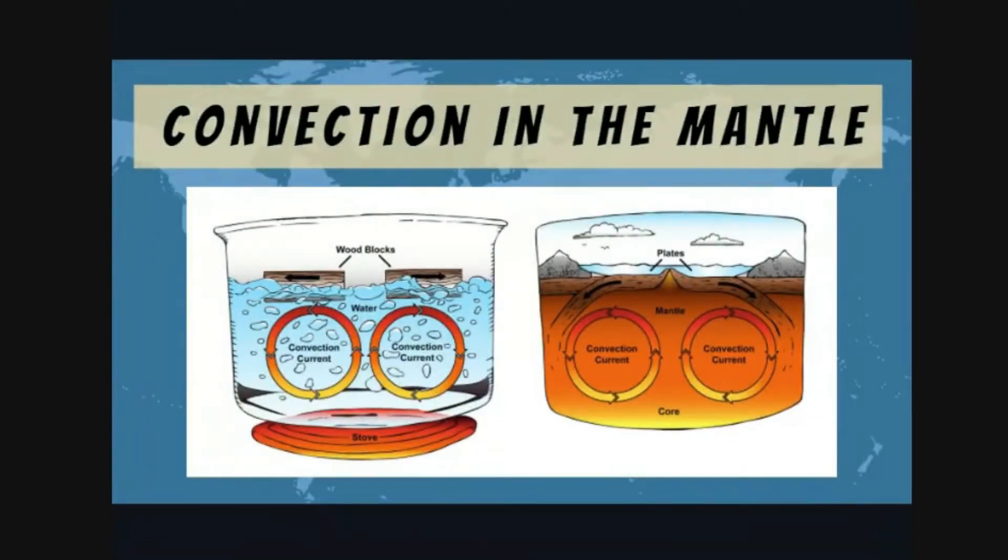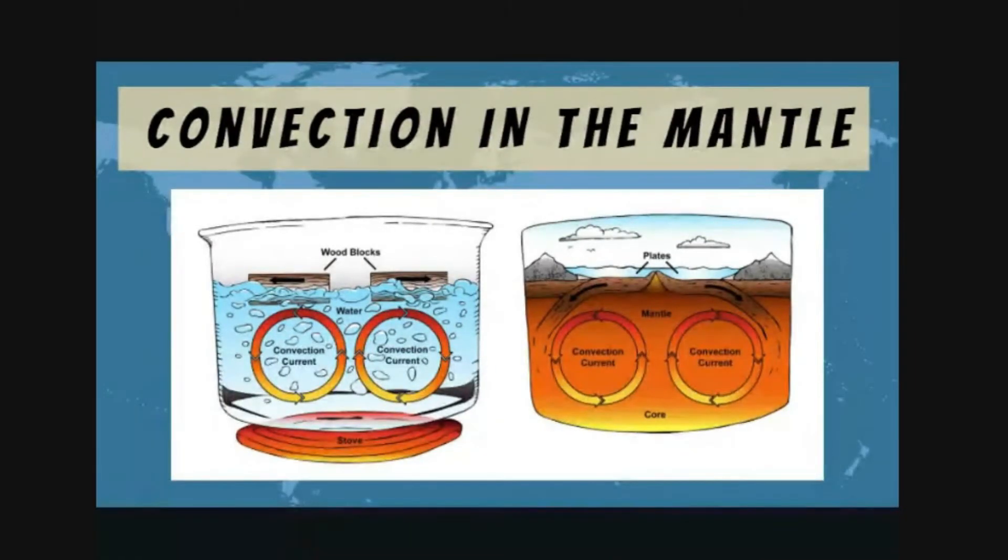Let's compare the convection current. What happens in our example of boiling water? Convection current also happens inside our earth in the mantle. When we boil water, the source of our heat is the stove. The fire comes from there, it will transfer its heat to the container, then there will be heat transfer inside through convection current.